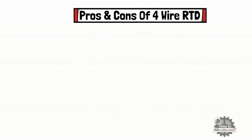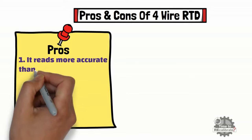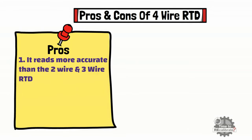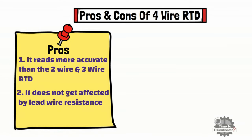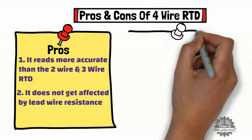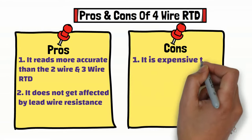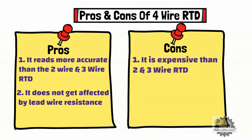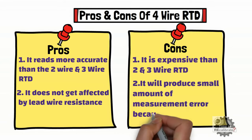Now let's learn the pros and cons of 4-wire RTD. For advantages: firstly, 4-wire RTD reads more accurately than 2-wire and 3-wire RTD, and it is commonly used in test laboratories where exact temperature readings are required. Secondly, 4-wire RTD does not get affected by lead wire resistance, and this is the reason it gives a high degree of accurate temperature measurement. There are a few drawbacks: first, 4-wire RTD is more expensive than 2-wire and 3-wire RTD. In addition, if you use a 4-wire RTD for a long period of time, it will produce a small amount of measurement error due to self-heating.